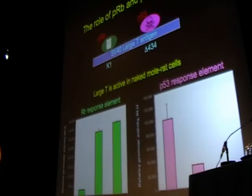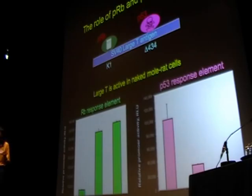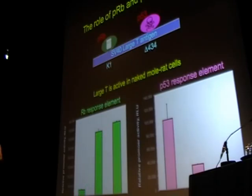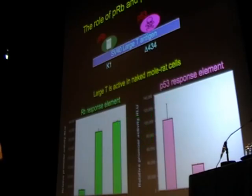Before other experiments, we first tested whether LHT is still active in naked mole-rat cells, since we know it works in human and mouse but nobody had worked with naked mole-rats. We co-transfected naked mole-rat fibroblasts with an RB reporter plasmid along with LHT or Delta434. Since RB represses the promoter, removing RB with LHT or Delta434 caused reporter expression to go up — confirming it's active. For P53, using a P21 promoter reporter that is upregulated by P53, removing it with LHT and K1 caused expression to go down compared to GFP control. This confirms LHT works perfectly in naked mole-rat cells.